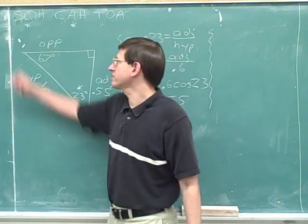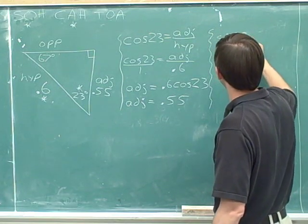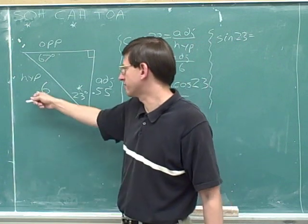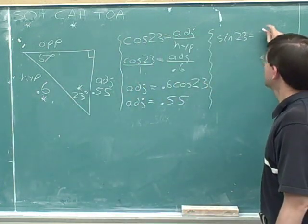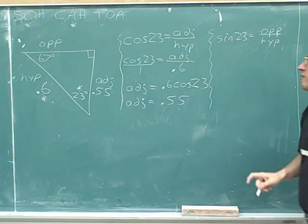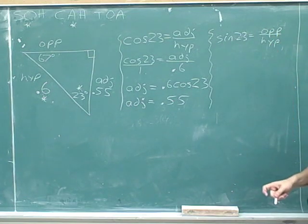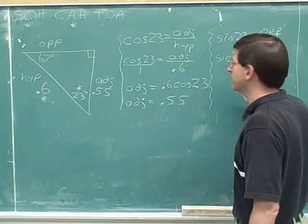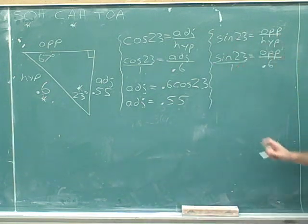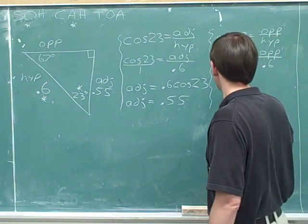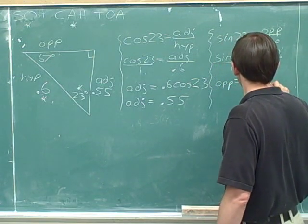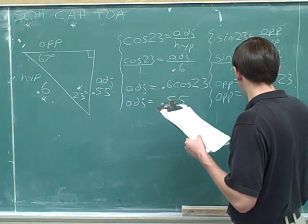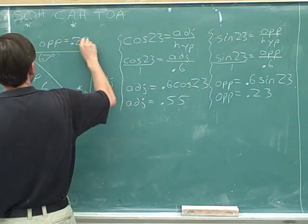Now following along with our plan, we're going to use the sine. There are actually a bunch of different ways to find the length of the opposite side, but the way we'd usually do it is to use the sine, because that relies on the information we were originally given about the hypotenuse. Sine of 23 equals opposite over hypotenuse. Please remember to write down the angle. We don't know the opposite side, but we were given the hypotenuse: 0.6. Cross-multiplying gives us the opposite length equals 0.6 times sine of 23, which is approximately 0.23.